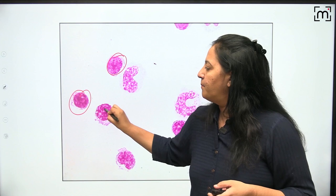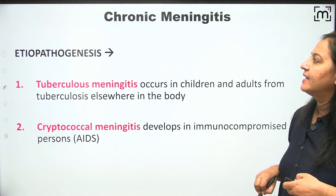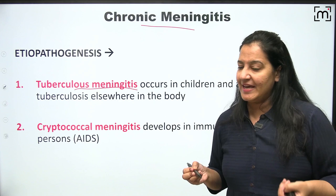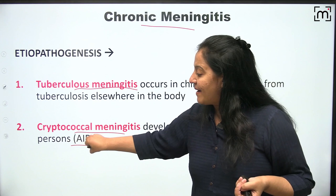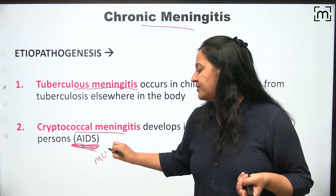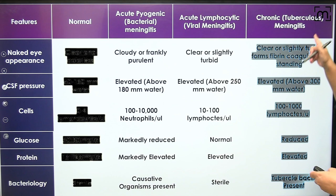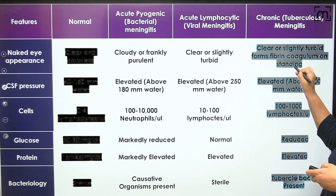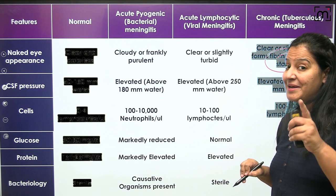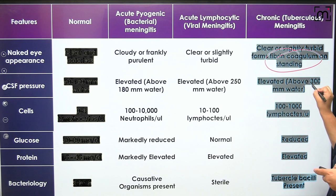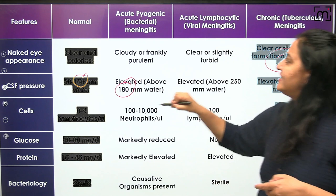The last type is chronic meningitis — caused by Mycobacterium tuberculosis or Cryptococcus, which is the most common cause of meningitis in AIDS/immunocompromised patients. The most important CSF finding is the formation of a fibrin cobweb coagulum. This cobweb appearance is diagnostic for tubercular meningitis. CSF pressure is elevated up to 300.